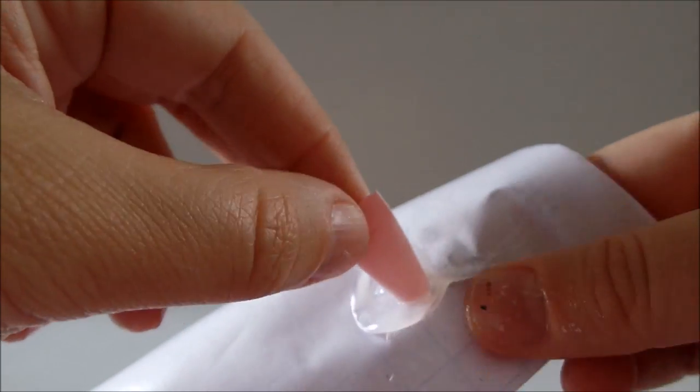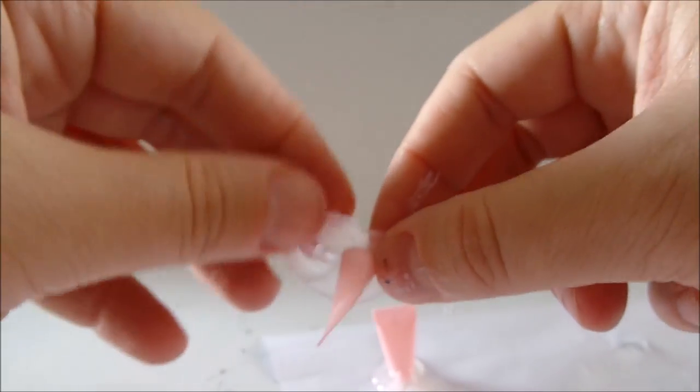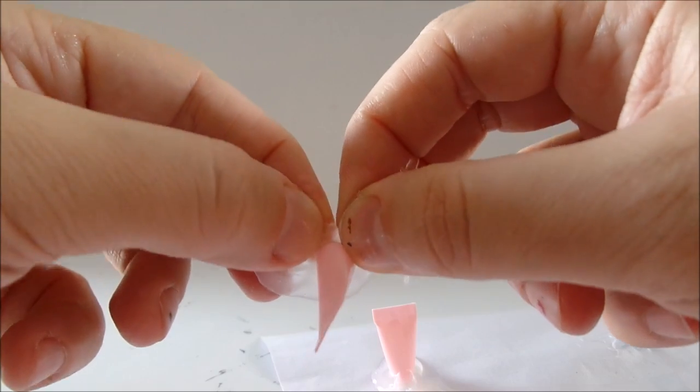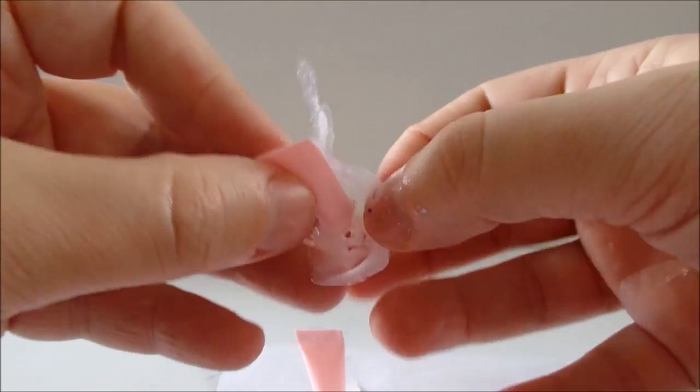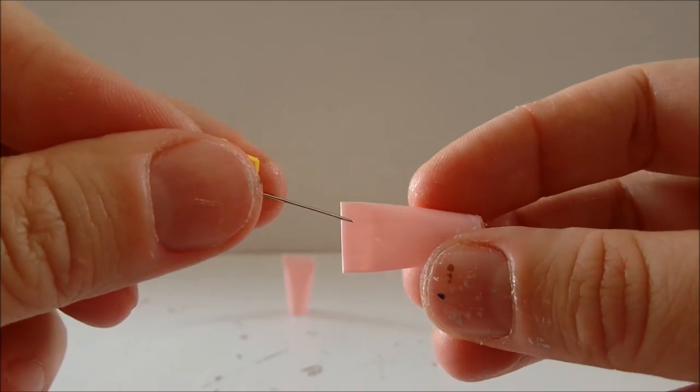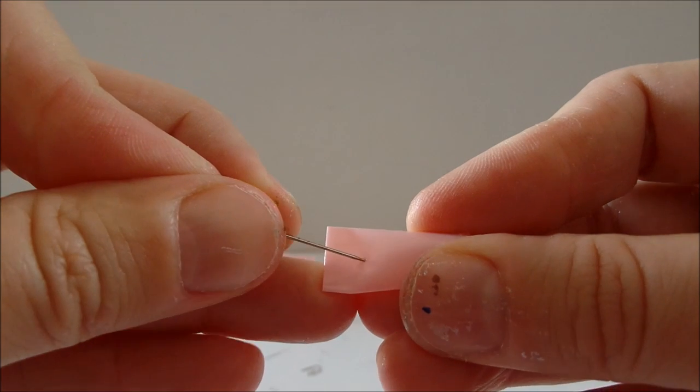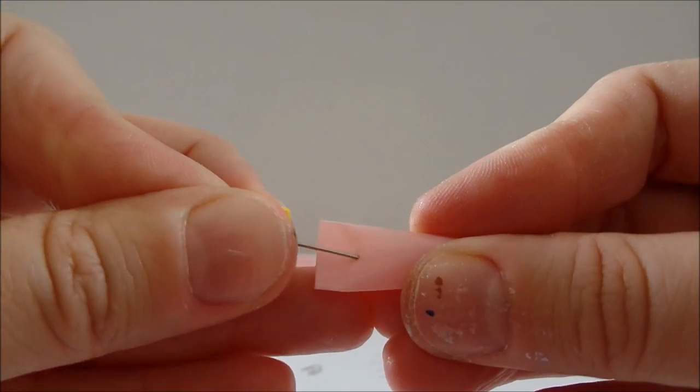When the glue is solid, peel it off the straw. Take a needle and punch a small hole here in the middle of the drink.